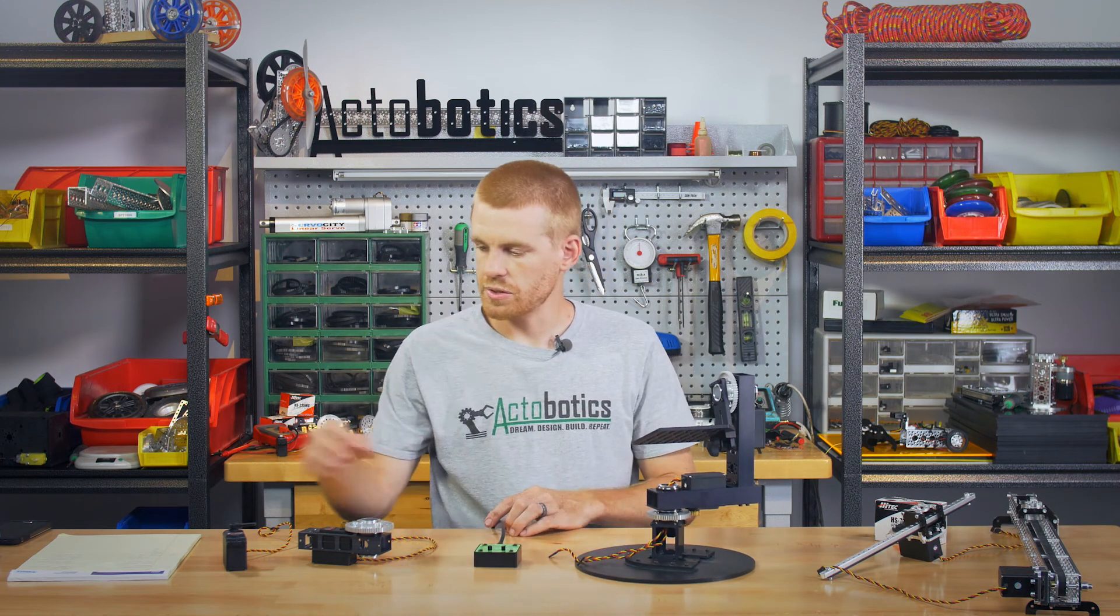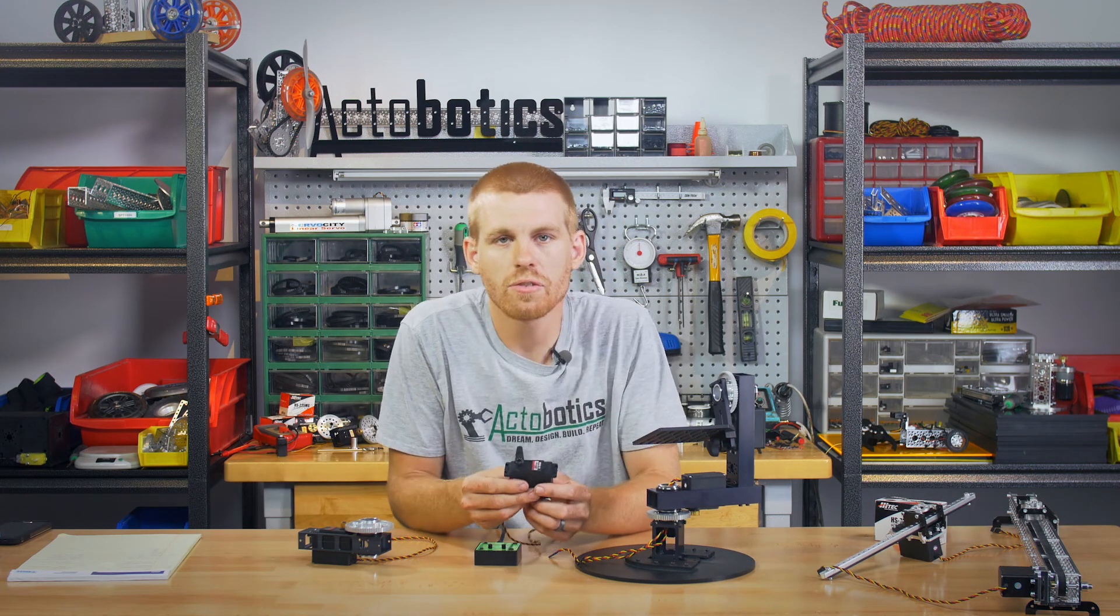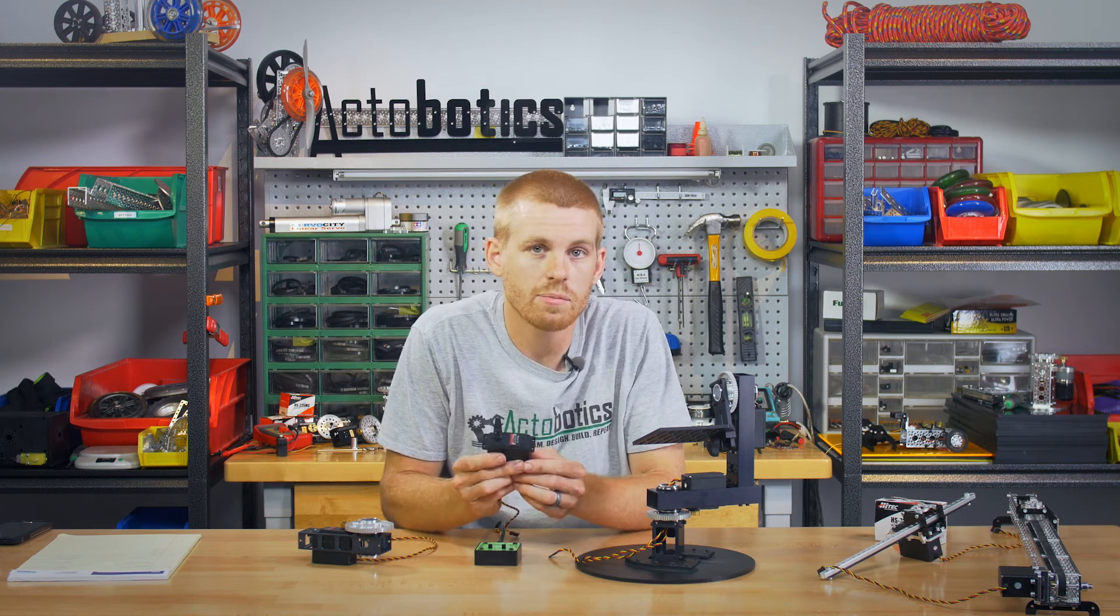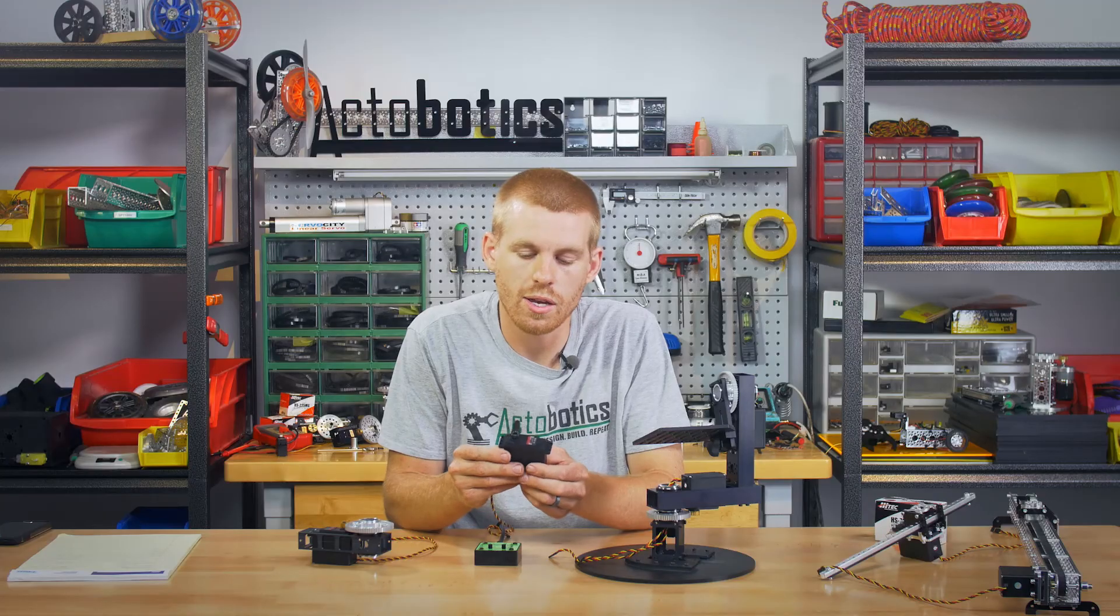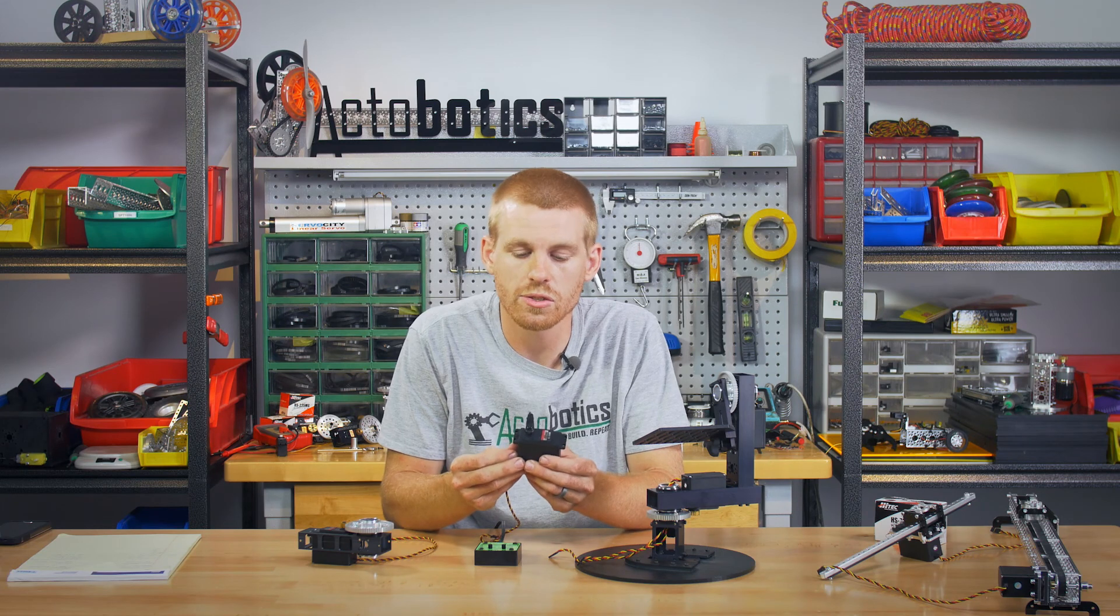So that's basically it. The HS785 HB servo, to recap, it's a multi-turn servo with an internal potentiometer. It's a quarter scale size, runs on 4.8 to 6 volts, and it has 183 ounces of torque.